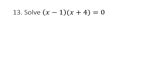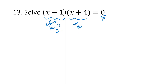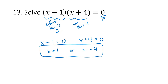For (x minus 1)(x plus 4) equals 0, don't multiply out — recognize that two things multiplied together equal zero, meaning one of them must be zero. Either (x minus 1) equals 0, giving x equals 1, or (x plus 4) equals 0, giving x equals negative 4. So we have two solutions: x equals 1 or x equals negative 4.